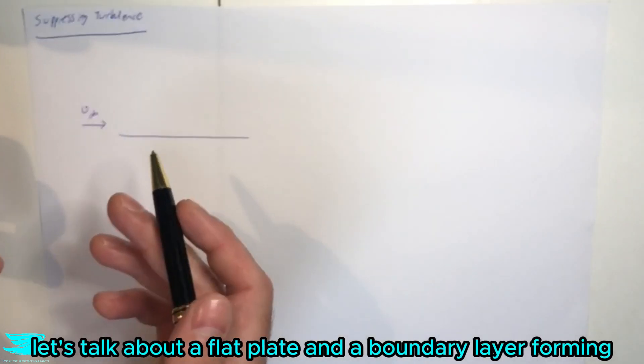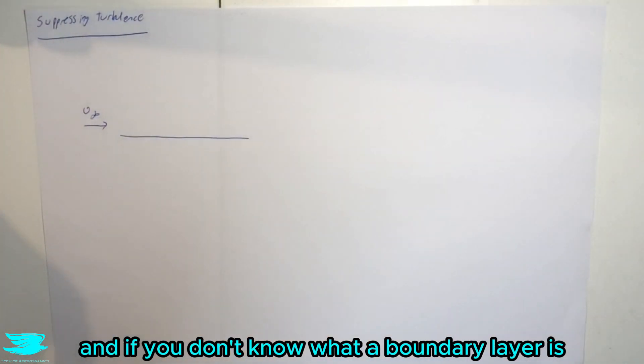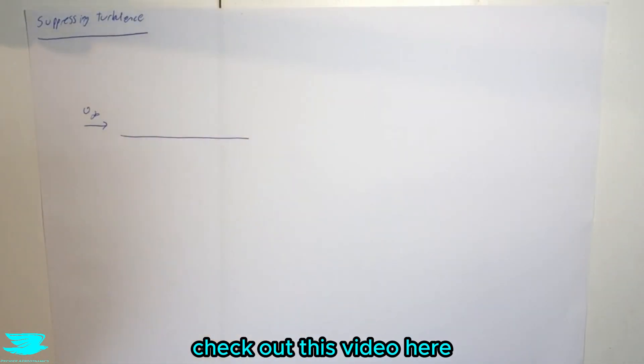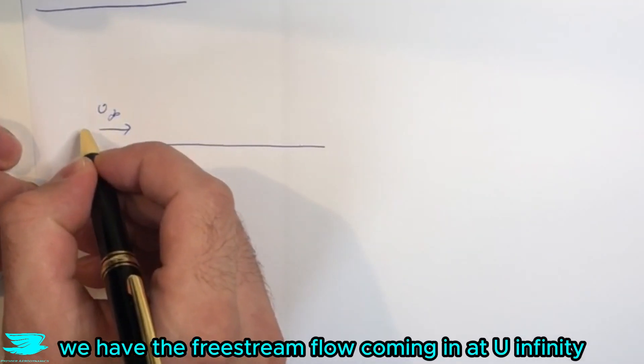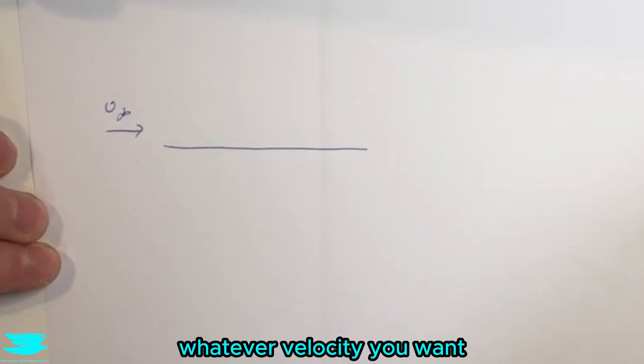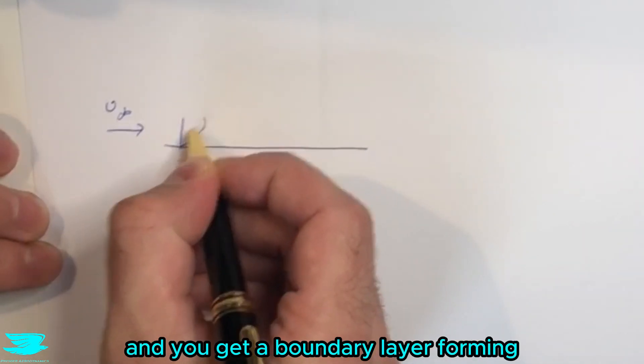So to begin with let's talk about a flat plate and a boundary layer forming. If you don't know what a boundary layer is, check out this video here. So we have the freestream flow coming in at u infinity and you get a boundary layer forming.